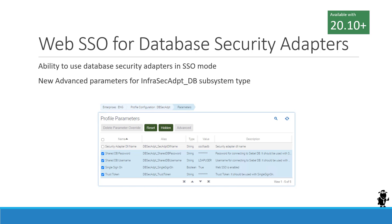Web SSO is also enabled for the common database security adapter. These are enterprise profiles — or named subsystems — of the type InfraSec_ADPT_DB. The existing standard database security adapter is of that type. There is a group of new parameters found under advanced parameters for that subsystem type. These parameters include a flag to enable single sign-on, corresponding to what we saw in the previous screenshot.